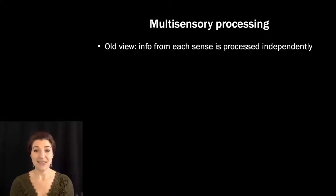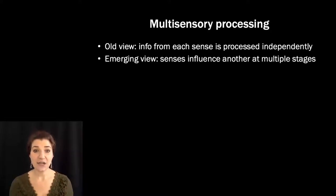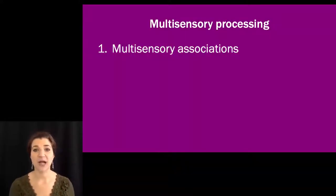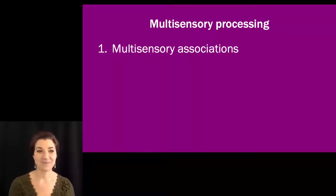You read in the Rosenblum article that the old view of multisensory processing was that sensory processing happened in semi-rigid compartments in different parts of cortex. But it's becoming increasingly clear that senses influence one another at multiple stages. So today we're going to talk about three different types of multisensory processing to help give you a sense of all the ways that our sensory systems can interact.